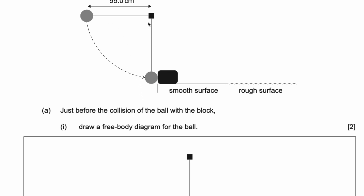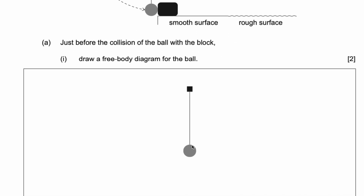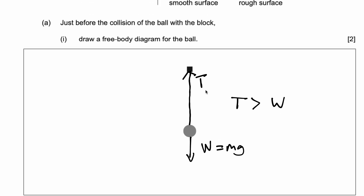What this means is when the ball is at the vertical position, they are asking us to draw a free body diagram. We know on this ball there are two forces acting: we have a tension, created from this string, and we have a weight component downwards. Weight is nothing but mass times gravity. Note how my tension is greater than my weight. The reason for this is if weight were greater than tension, the ball would break off from the string and fall down. So tension has to be greater than weight, and the tension arrow is longer than the weight arrow. This is the free body diagram.